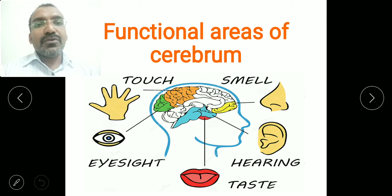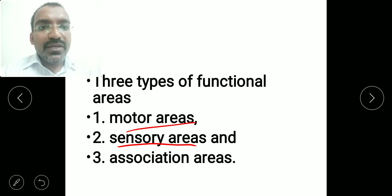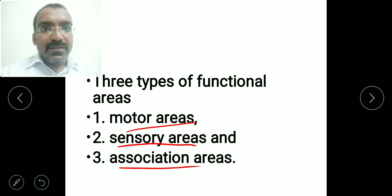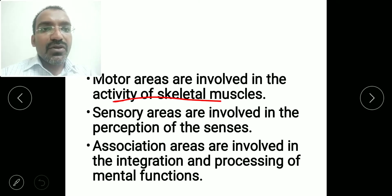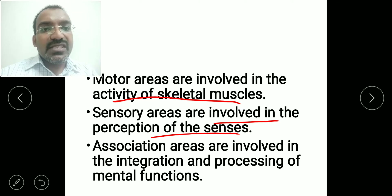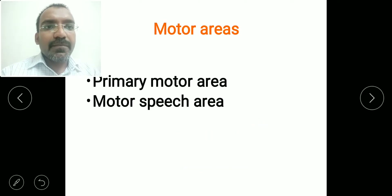Hi everyone, this is G.B. Sebastian and I'm going to discuss the functional areas of the cerebrum today. There are three different types of functional areas: the first is the motor area, the second is the sensory area, and the third is association areas. Motor areas are mainly involved in the activity of skeletal muscles, sensory areas are involved in the perception of senses, and association areas are involved in the integration and processing of mental functions such as intelligence, reasoning, thinking, and judgment.